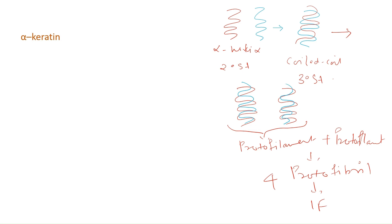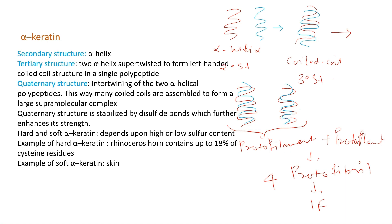Two protofilaments join to form a protofibril; four such protofibrils join to form an intermediate filament. So: secondary structure = alpha helix; tertiary structure = two alpha helices super-twisted into a left-handed coiled-coil; quaternary structure = two coiled-coil structures assembling into a large supramolecular complex (protofilament), continuing up to the intermediate filament.